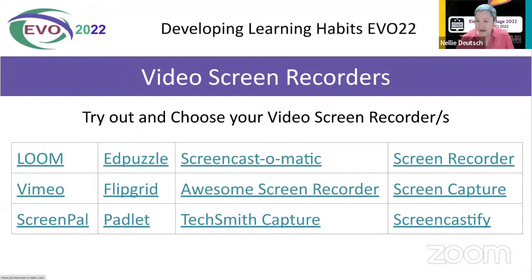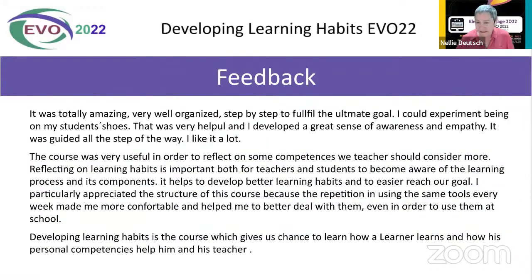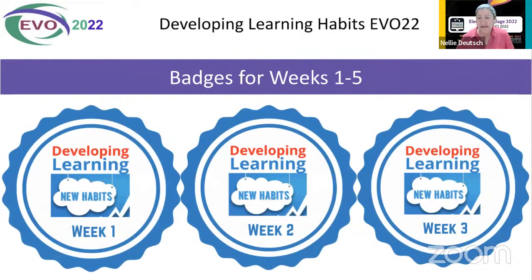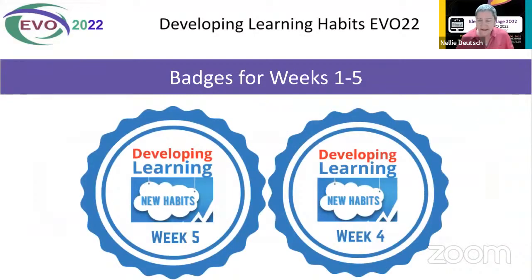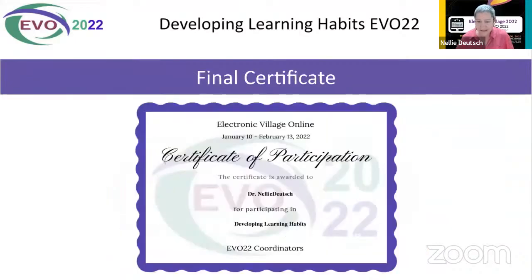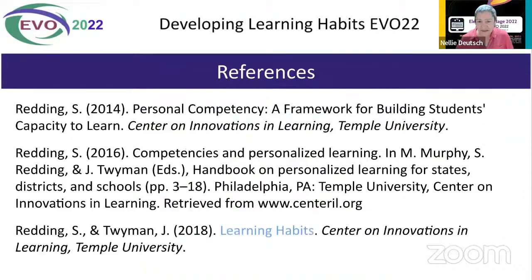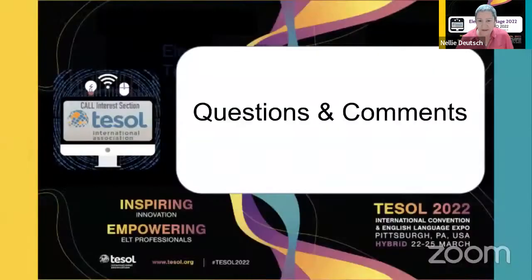These are some of the curation boards and video recorders. They also created videos showcasing what they did. There are a few feedbacks here. These are the badges for weeks one to five. As Sudarshana mentioned, they had to complete the task and then they got full marks — it's either you do it all or it's not done. And that's the final certificate.